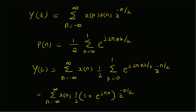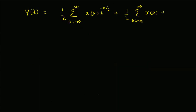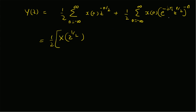We can write e^(jπn)·z^(−n/2) as (e^(−jπ)·z^(1/2))^(−n). So the first term becomes the Z-transform with variable z replaced by z^(1/2), which is X(z^(1/2)), and the second term is the Z-transform with variable z replaced by e^(−jπ)·z^(1/2) = −z^(1/2), giving X(−z^(1/2)). Since e^(−jπ) = −1, the final result is Y(z) = (1/2)·[X(z^(1/2)) + X(−z^(1/2))].